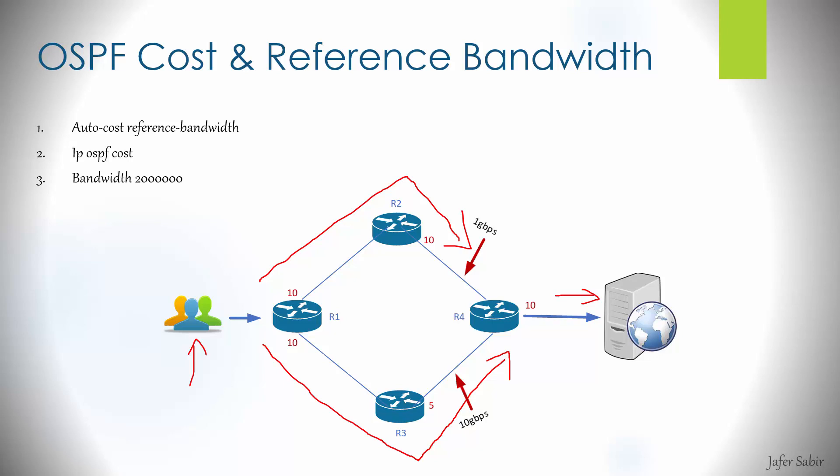To verify the cost of an interface, we can run the show IP OSPF interface brief command, which shows the costs of all interfaces. We can also run show IP OSPF interface followed by the interface name — for example FA0/1 — if we want to see the cost of that particular interface.